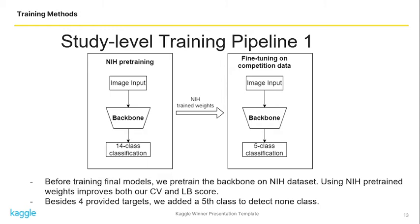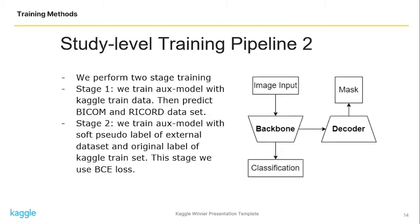Besides the provided targets, we added a fixed class to detect non-COVID and this also improves our accuracy for this pipeline. In pipeline 2 we perform two-step training: in stage 1 we train our model with the Kaggle training dataset and then generate pseudo labels for BIMCV and RICORD datasets. In stage 2 we train our model with soft pseudo labels of the external dataset and original labels from the Kaggle training set, using binary cross-entropy loss.